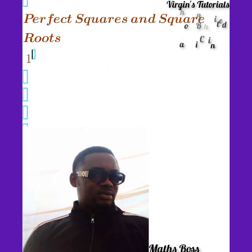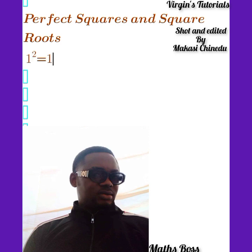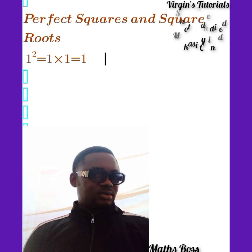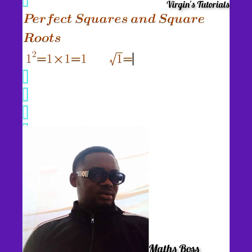Now, we have 1 raised to a power, so that is 1 squared. It's simply equal to 1 times 1, and 1 times 1 is just 1. Then, from the square root side, when we have the square root of 1, it's simply equal to 1. So, 1 times 1 is 1, and the square root of 1 is still 1.